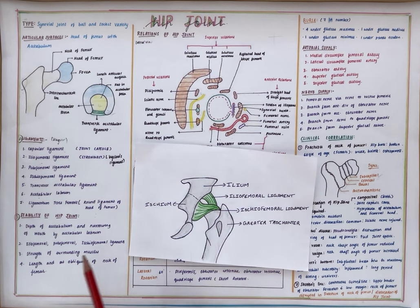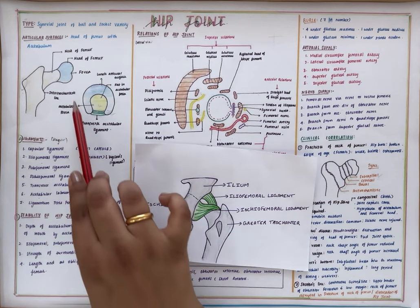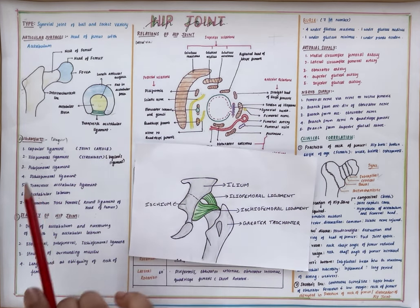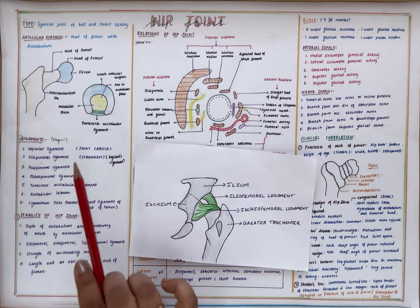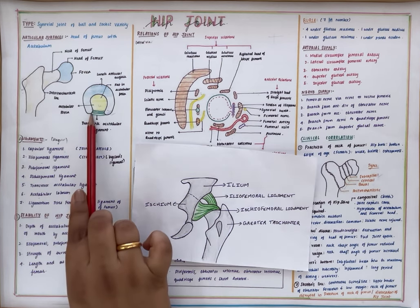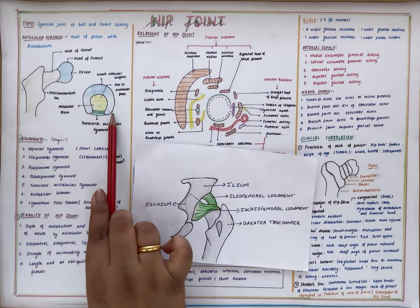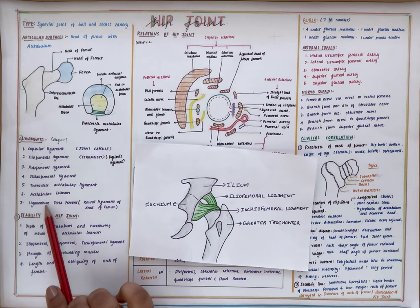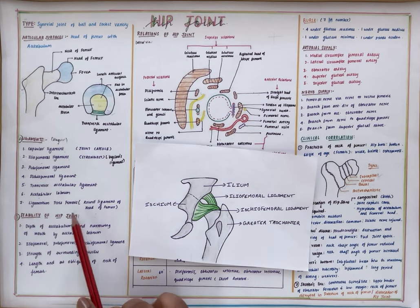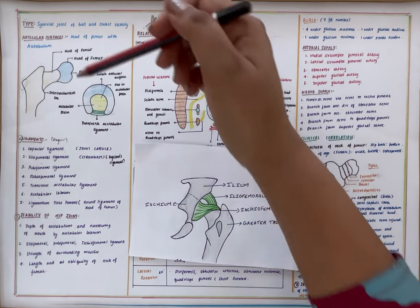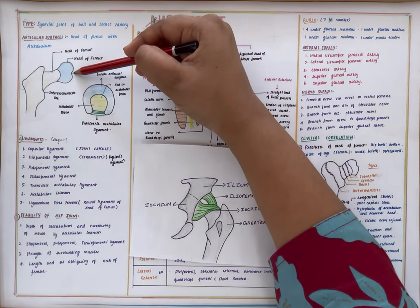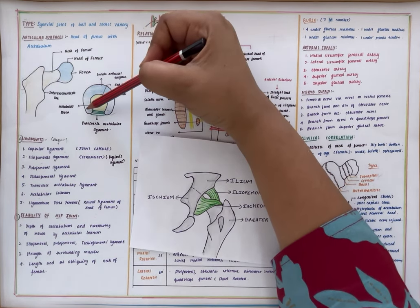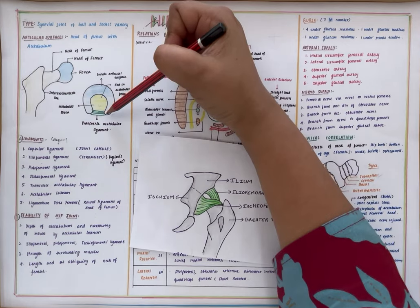Apart from this, the acetabular labrum lines the acetabulum. Then we have the transverse acetabular ligament, which connects the acetabular labrum. Then we have the ligamentum teres femoris, which extends from the fovea present in the head of the femur to the acetabular labrum.